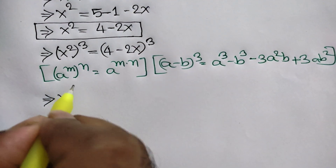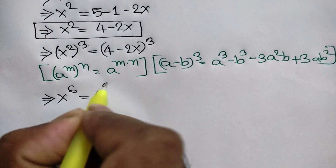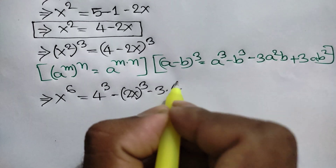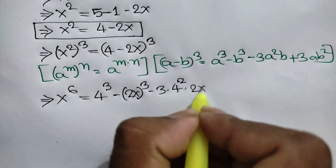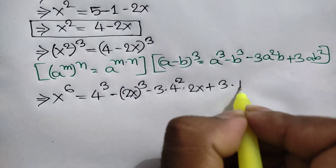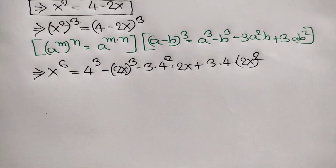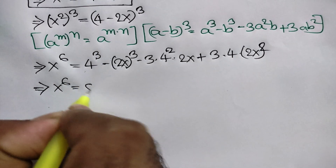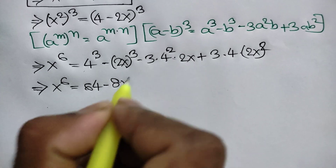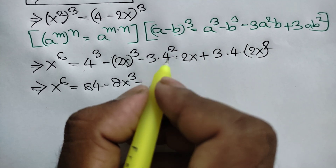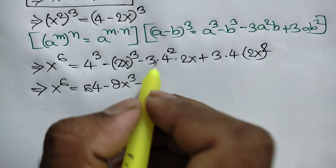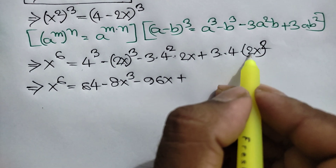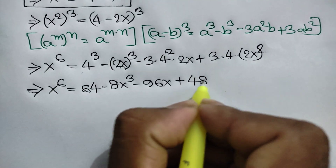Applying these two rules, x to the power 2 times 3 is 6, equals 4 cubed minus 2x whole cubed minus 3 times 4 squared times 2x plus 3 times 4 times 2x whole squared. So x to the power 6 equals 64 minus 8x cubed minus 3 times 16 times 2 times 3 is 96x plus 3 times 4 is 12, 12 times 4 is 48x squared.